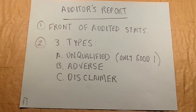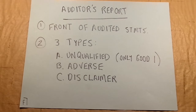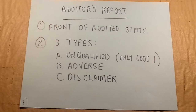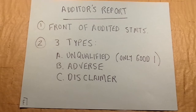An unqualified opinion is the only good one — it means the statement is presented fairly; what you see is what you get. An adverse opinion says the statements are not transparent and the company has not followed generally accepted accounting principles. A disclaimer opinion means the financial statements are right except for one significant issue. For example, if no audit was done last year and the company has beginning inventory, the auditor may disclaim because they can't verify whether inventory is accurate — there was no count performed last year.